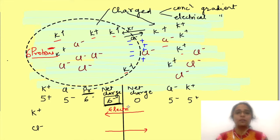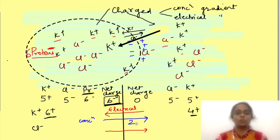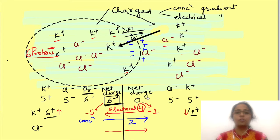So an electrical gradient for positive ions develops from outside to inside, and for negative ions from inside to outside. Say 1 potassium ion moves from outside to inside — potassium outside becomes 4 while inside it becomes 6 ions. Now due to this difference in numbers, a concentration gradient for potassium has developed from inside to outside. The electrical gradient also changes: with decreased positive charge outside and increased positive charge inside, there is now an electrical gradient of 4 from outside to inside and a concentration gradient of 2 for potassium from inside to outside.